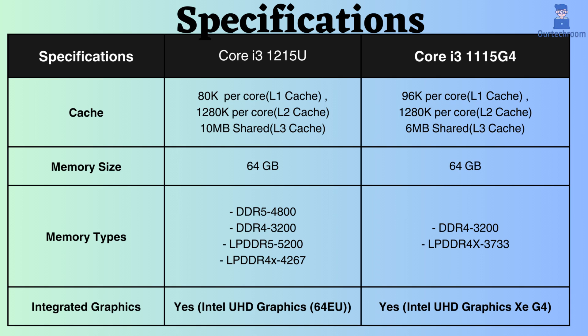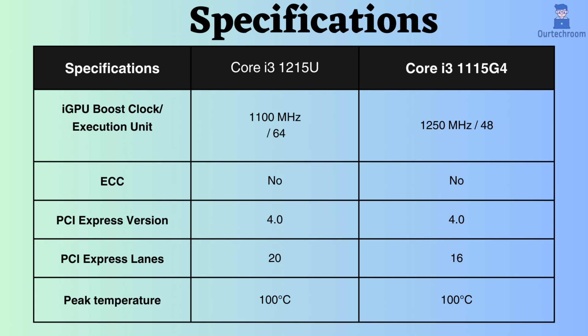Both of them support integrated graphics. The Core i3-1215U supports Intel UHD Graphics 64EU, whereas the Core i3-1215G4 supports Intel UHD Graphics ZG4. The graphics performance for the Core i3-1215G4 is better for gaming, video editing, or creative work. Furthermore, the boost frequency for graphics for the Core i3-1215G4 is higher, but the execution unit count for the Core i3-1215U is greater. Neither of them supports ECC, making them unsuitable for critical systems such as workstations and servers. Both support PCI version 4, and the Core i3-1215U supports more PCI lanes, allowing it to support more PCI devices.